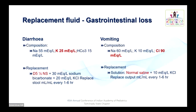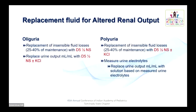For vomiting, where chloride loss is high, use normal saline with 10 mEq/L of KCl, replacing output ml per ml. For the oliguric child, give insensible water loss as maintenance with D5-NS and replace urine output ml per ml with D half-NS plus or minus KCl depending on serum potassium. For polyuria, replace insensible losses with D5-NS plus or minus KCl, measure urine electrolytes, and use the closest matching fluid to the urinary electrolyte values.